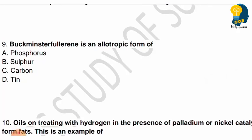Next question: Buckminster fullerene is an allotropic form of — this is covered in the introduction part of Carbon and its Compounds. Options are phosphorus, sulphur, carbon, or tin. Buckminster fullerene is an allotropic form of which element? Very simple question.